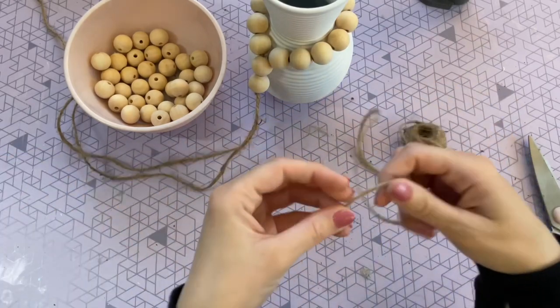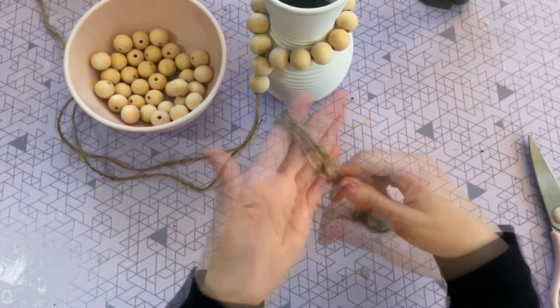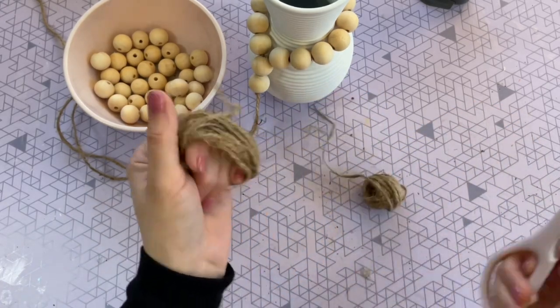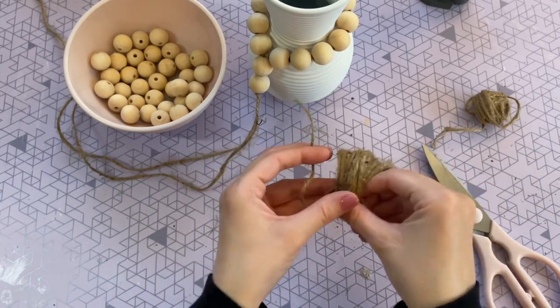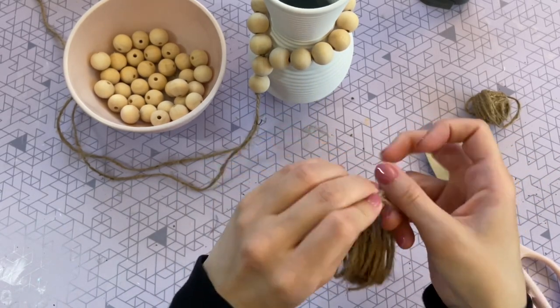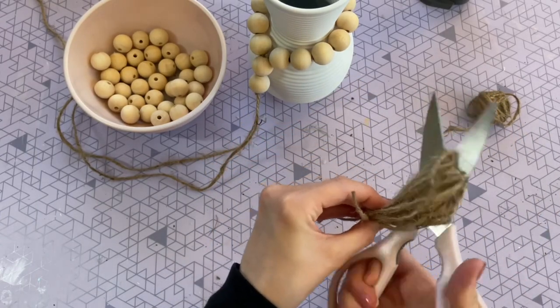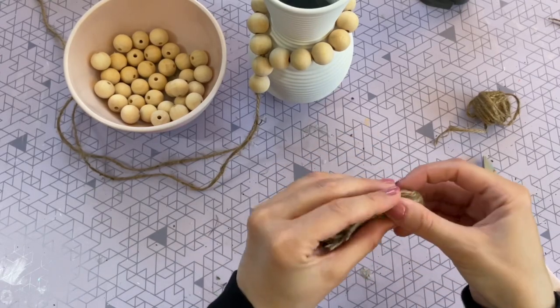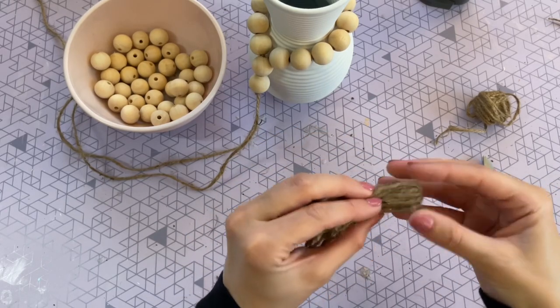To finish off this beaded strand, I just want to make a really simple tassel. So to do that, just grab your twine. You want to hold it in place around your four fingers, wrap it around a bunch of times. Then you can just trim it, cut a small piece of twine, just push that right through that loop. And then you're going to make a knot or two on top. Then I'm just going to be cutting directly across from that knot and then folding it over to hide that knot in the head of the tassel. That way you cannot see it.